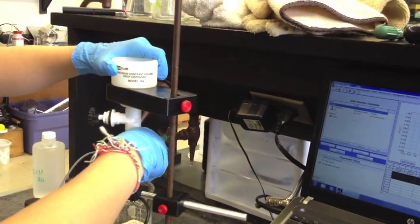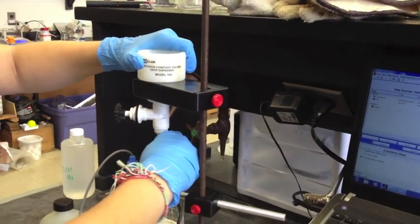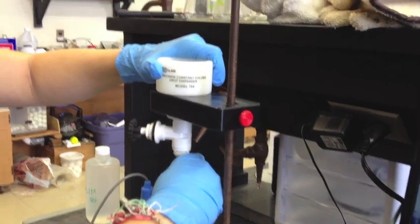Now we can begin our experiment. Start collecting the data using Microlab, then start the drop counter to begin titrating the Coke with the sodium hydroxide.